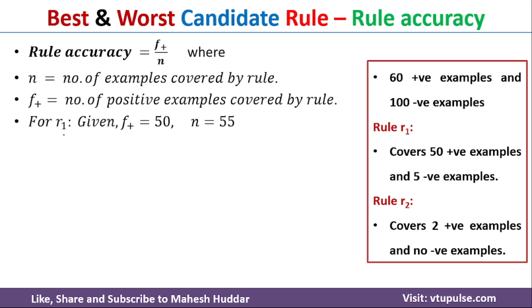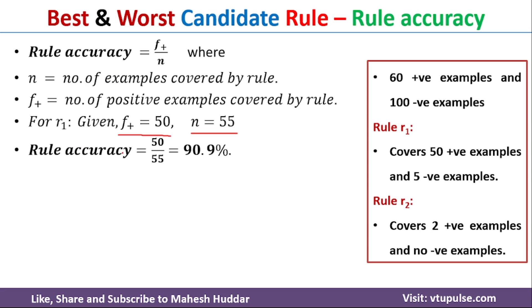If we consider the first rule, there are 50 positive examples, meaning f+ is equal to 50. And if we add both positive and negative examples, we have 55 examples, meaning n is equal to 55. The rule accuracy for rule number one is equal to 50 divided by 55, which is equivalent to 90.9%.